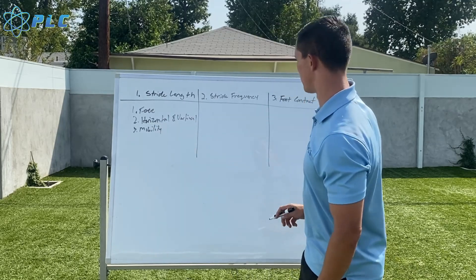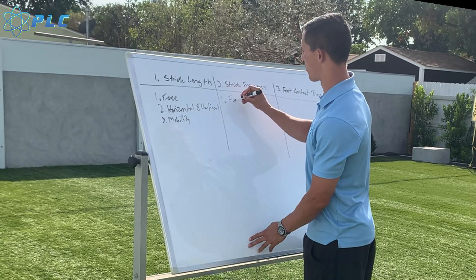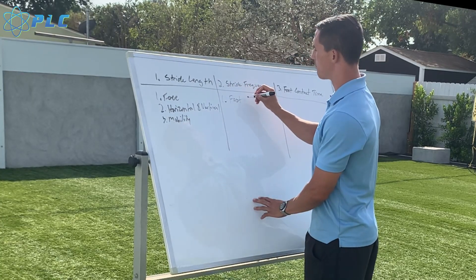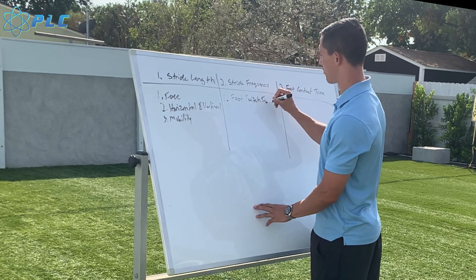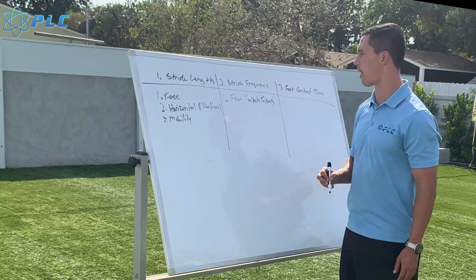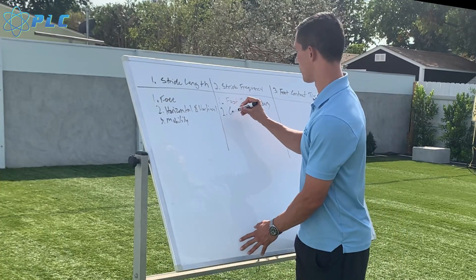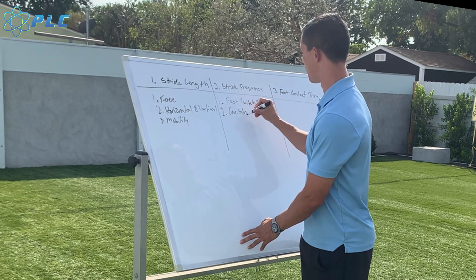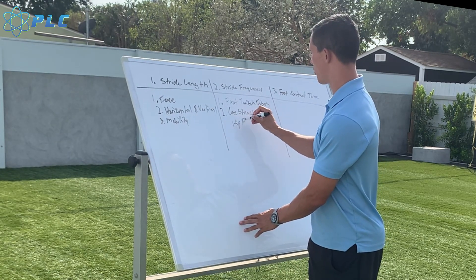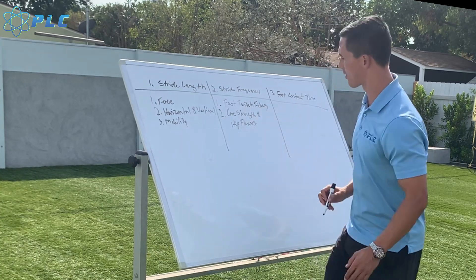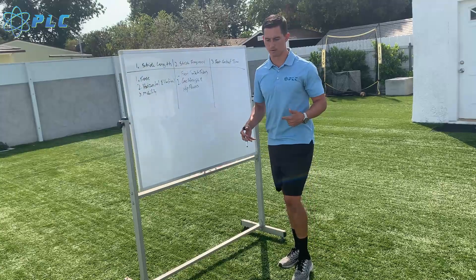The next thing is stride frequency. One of the important things that goes into this is fast twitch muscle fibers — how many fast twitch muscle fibers you naturally have in your body will have a big impact on how fast you're able to turn over your legs. Another big thing is going to be core strength and hip flexor strength, and how well you can maximize that knee-up position and get that leg through quickly.